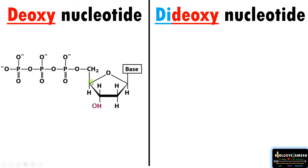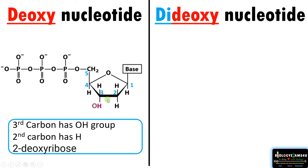Let's start with deoxynucleotide. A deoxynucleotide is a normal nucleotide present in a DNA molecule. It is made up of a sugar, a nitrogenous base, and a phosphate group. In deoxynucleotide, the third carbon position has a hydroxyl group, which is essential for formation of an ester bond with the incoming nucleotide. At the second carbon position there is hydrogen, making it 2-deoxyribose — meaning oxygen is absent at the second position.